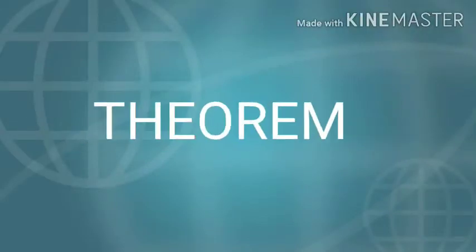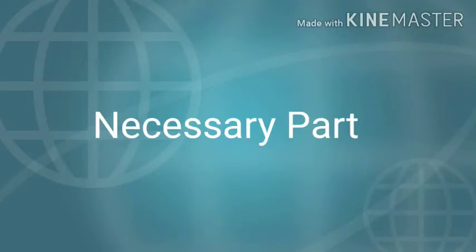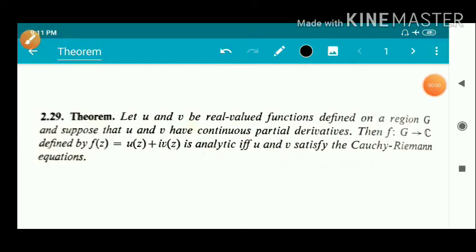Dear students, in this video we discuss the necessary part of a theorem. Statement of the theorem: Let u and v be real valued functions defined on a region g, and suppose that u and v have continuous partial derivatives. Then f from g to C, defined by f(z) equal to u(z) plus i·v(z), is analytic if and only if u and v satisfy the Cauchy-Riemann equations.